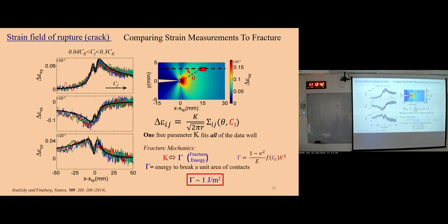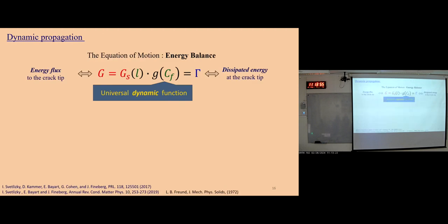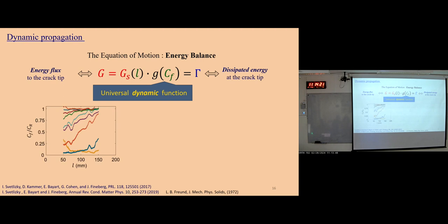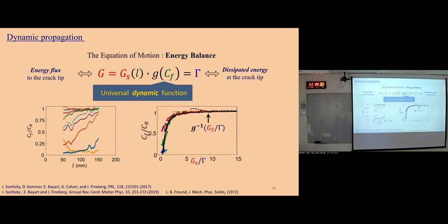More than that, as we have K, we can also calculate gamma — the fracture energy of the interface — which is about 1 joule per meter squared in the lab. Furthermore, when crack propagation is dynamic, it should be controlled by the equation of motion in LEFM: G equals gamma times a dynamic function, where G is only related to crack speed. When we do experiments with different crack lengths and speeds and plot them with the function G_S over gamma, we find they collapse. This profile is exactly the inverse function of G. So this shows us that friction rupture really is a shear crack.